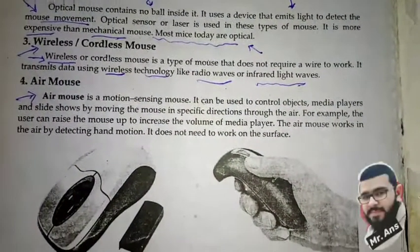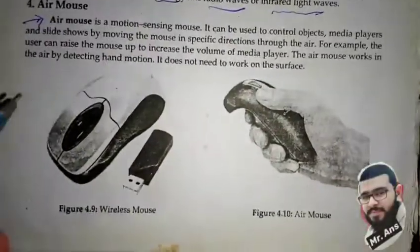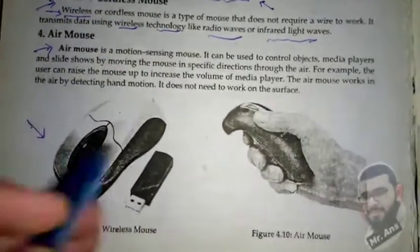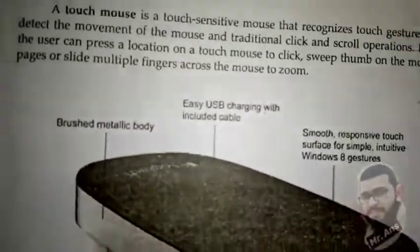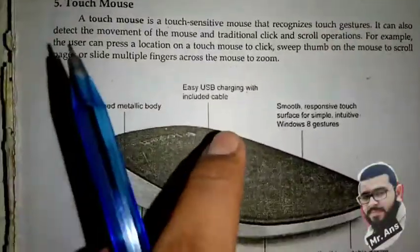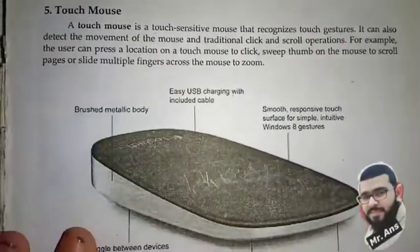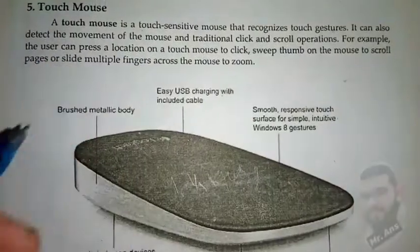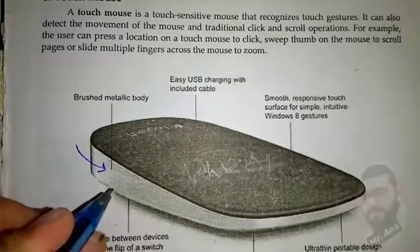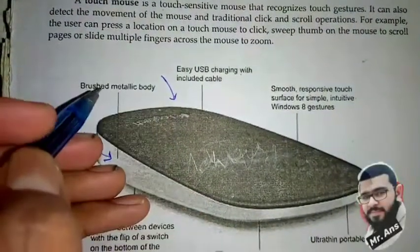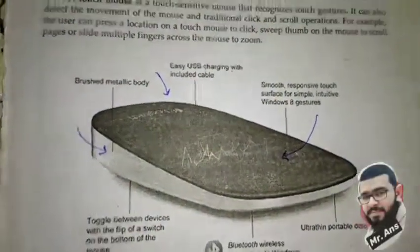The air mouse works in the air by detecting hand motion — it doesn't need to work on a surface. Here you can see the wireless mouse and this is the air mouse. Next we have the touch mouse. You can touch gently on it to control the cursor on the screen. It has a body we can charge, and a smooth pad where we can move our fingers.